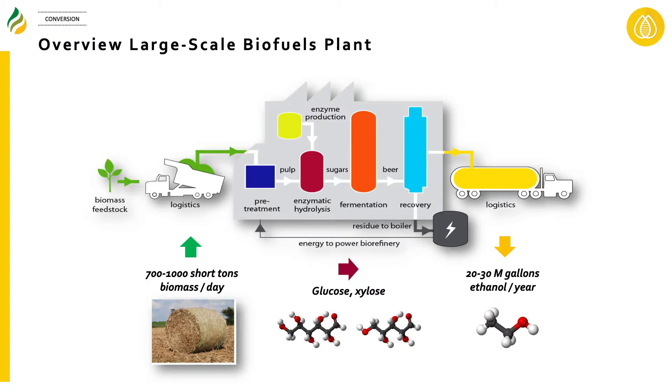In concept, the cellulosic biorefinery is straightforward: start with biomass, put it through pretreatment, release the sugars, and use a recombinant microorganism that utilizes both C5 and C6 sugars to produce ethanol or biofuel. But in reality, that is quite different — there are many challenges associated with this process.